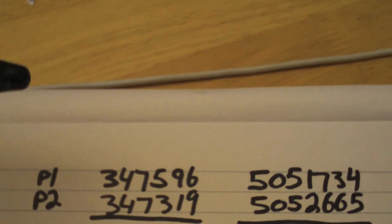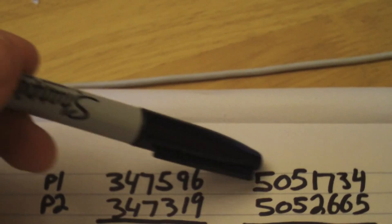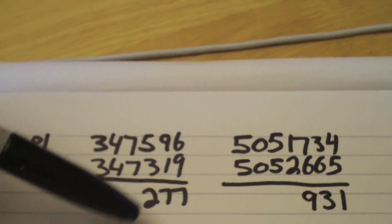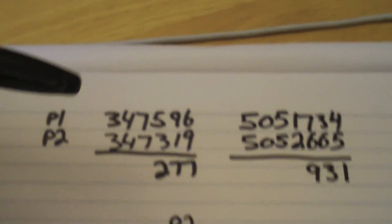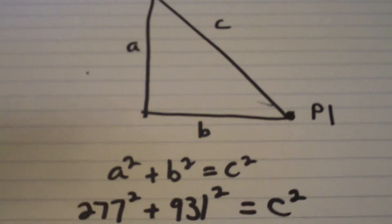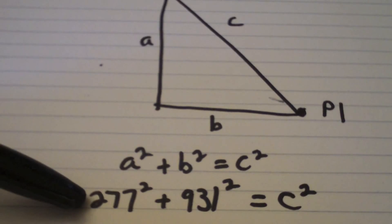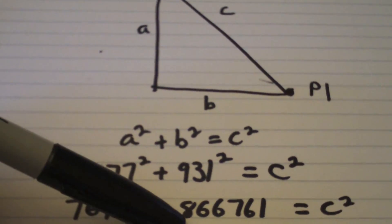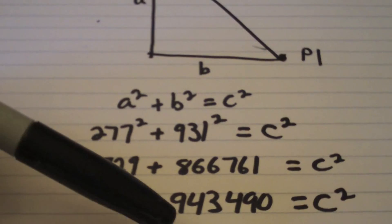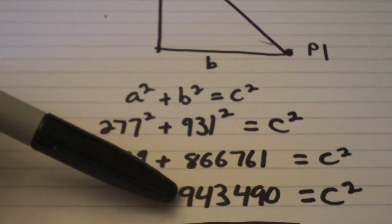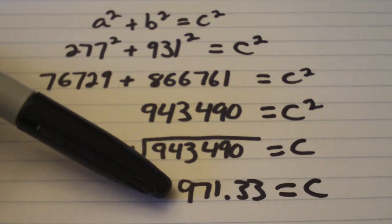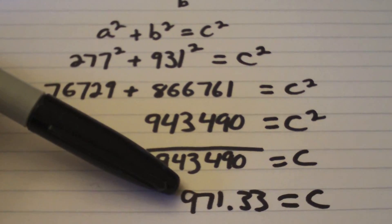Let's try this. So let's take the two waypoints I just showed you — here are the UTM coordinates for coordinate one and coordinate two. What you're going to do is subtract and get the positive difference for each of these eastings and northings, which will give you these two numbers. Once you've done that, we go back to our right angle triangle problem: the square root of 277 plus 931 — that gives us 76,000 and 866,000. We simply add those together to get 943,490. Then we do the square root of that, which brings us down to 971.33 — otherwise 971 meters.